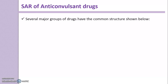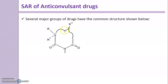Several major groups of drugs share a common structure shown here. The R' represents the bridging atom between positions in the ring. Depending upon that bridge, we get different categories of drugs. We use numbering for the bridge atom starting at position 1, and the carbon at position 5 is particularly important.